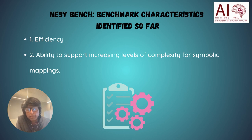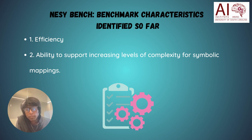Though further investigation is still pending, the current characteristics we have identified that need to be considered in neuro-symbolic AI method benchmarks are: efficiency — particularly GPU usage, number of parameters, and number of epochs for training the neural modules — and the neural module's ability to support increasing levels of symbolic mapping complexity.